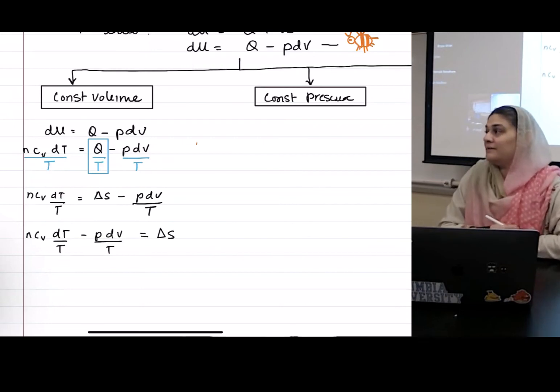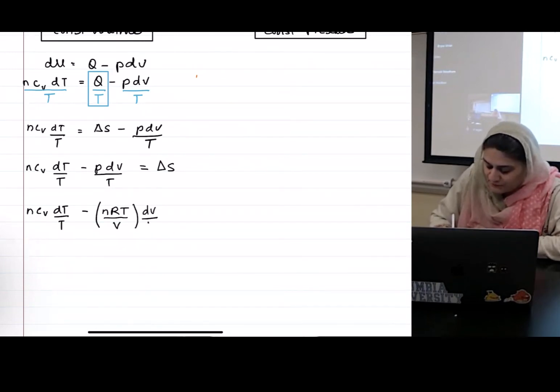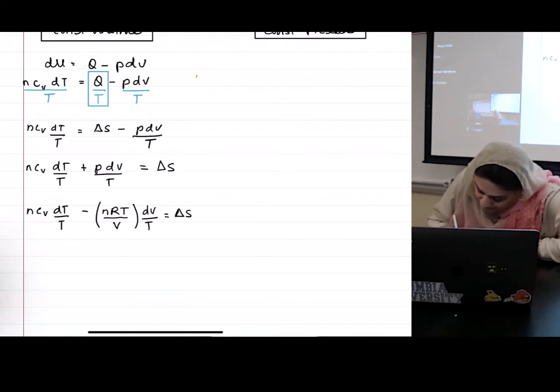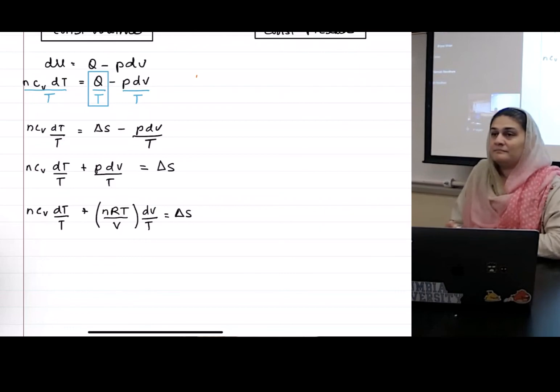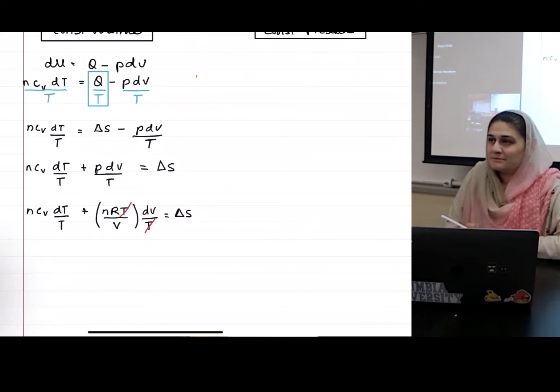What is the ideal gas equation? PV equals NRT. What will I get? May I plug that for P? What will I get? N Cv dT over T minus, if I take this, PV equals NRT, it will be NRT over V dV over T. Good catch. Are we good? What happens to my T? Goes away. Do you see something happening here? T's are going to go away. Can someone predict what I should do next? Integral.